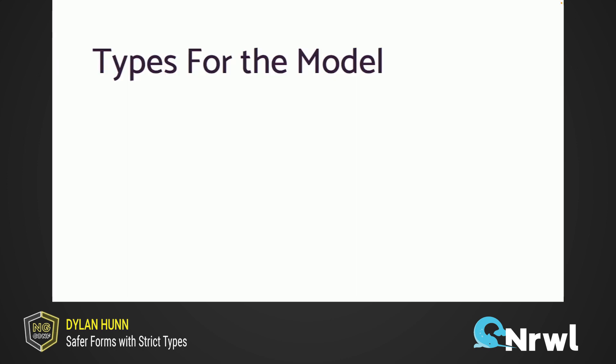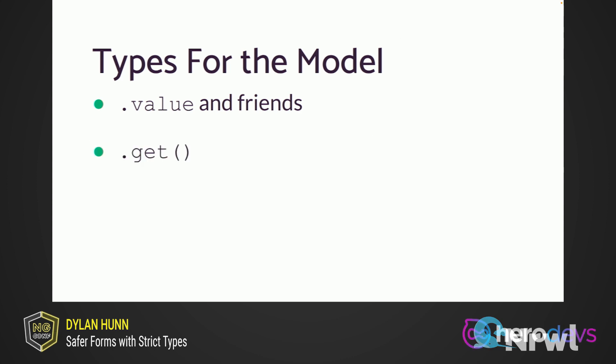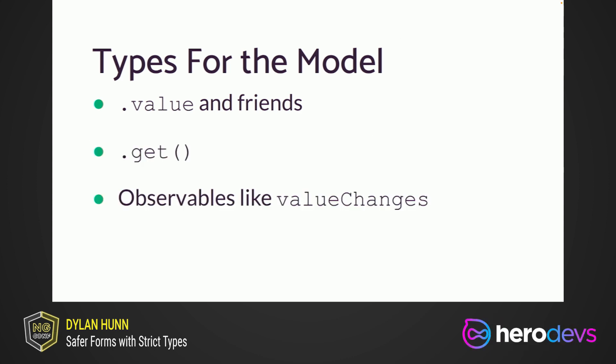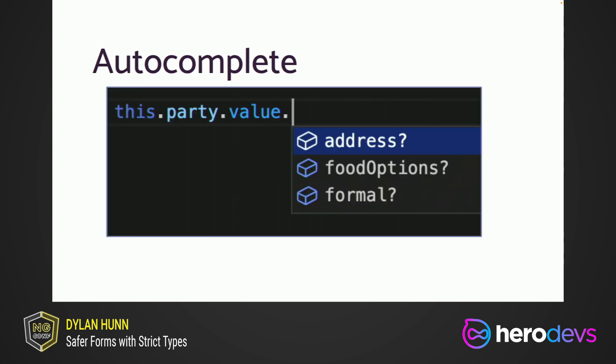These new types affect the entire model API surface, including ordinary values and sub-values, calling dot get for inter-nested controls, the observables that we use for state management, and all of the rest of the model API. Another big benefit is autocomplete — now that all the fields in a form group are statically known to the compiler, your editor can autocomplete them. This is a huge help when you're dealing with really complex, deeply nested forms and form groups.